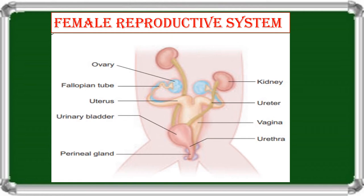The common tube formed by the union of the urinary bladder and the vagina is called the urinogenital canal or vestibule. This runs backwards and opens to a small slit-like opening called the vulva. Like the male reproductive system, the female reproductive system also has a pair of Cowper's glands and perineal glands which help in reproduction.